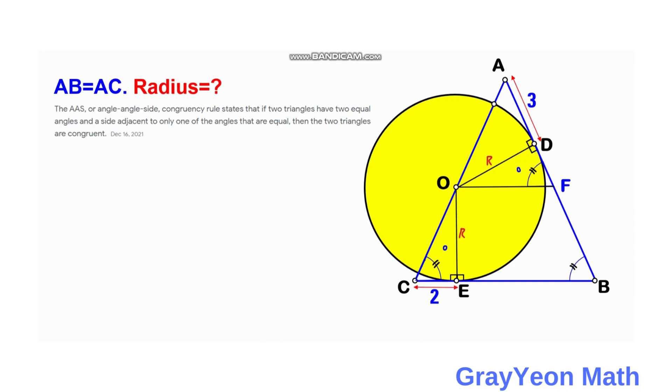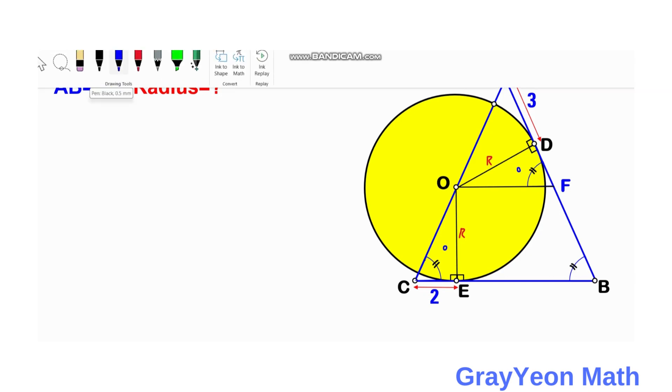We can apply the AAS or angle-angle-side congruency rule. It states that if two triangles have two equal angles—in our case angle D and angle E—and a side adjacent to only one of the angles, and they are equal because they are the radius of the circle, then these two triangles are congruent. Knowing that triangles ODF and OCE are congruent, if CE is 2, then DF should be 2 units also.